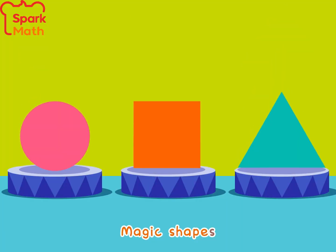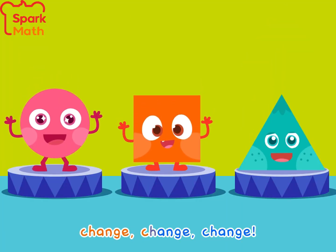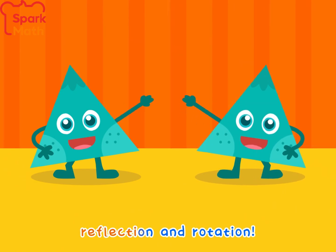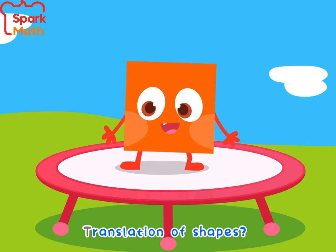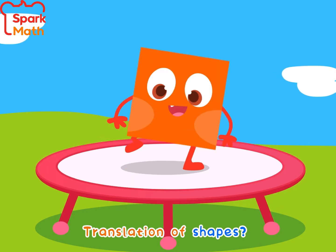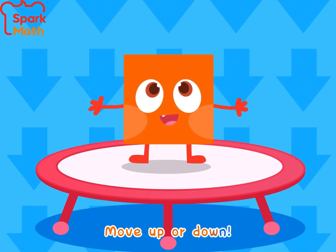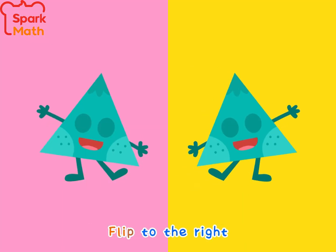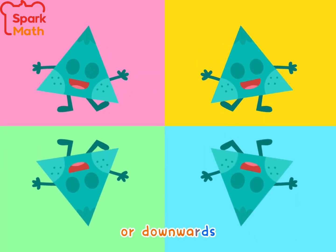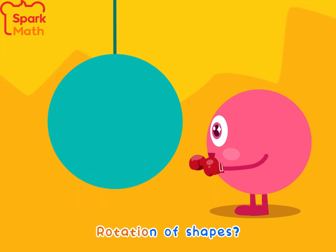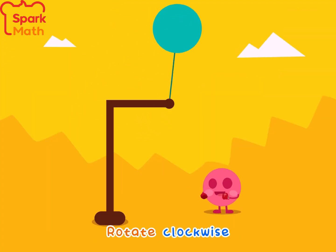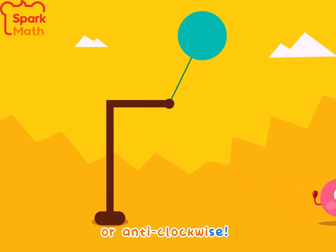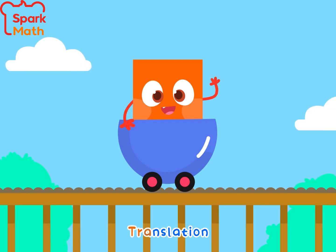Magic shapes — change, change, change. Translation, reflection and rotation. Translation of shapes: move up or down. Reflection of shapes: flip to the right or downwards. Rotation of shapes: rotate clockwise or anticlockwise.